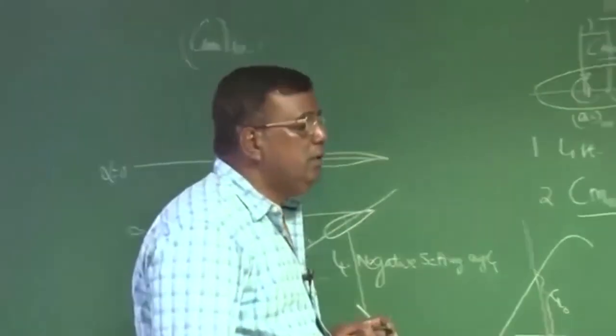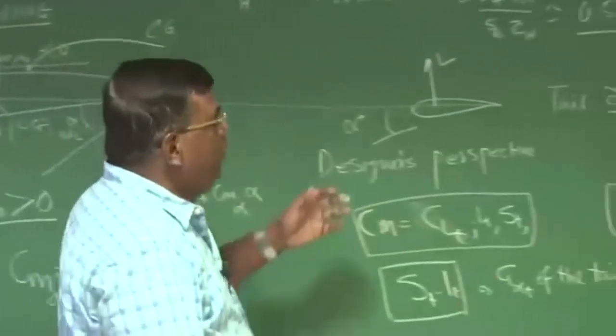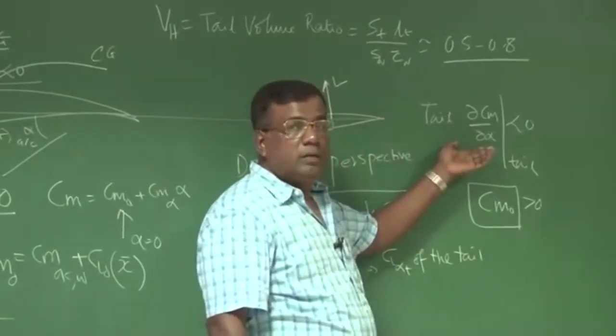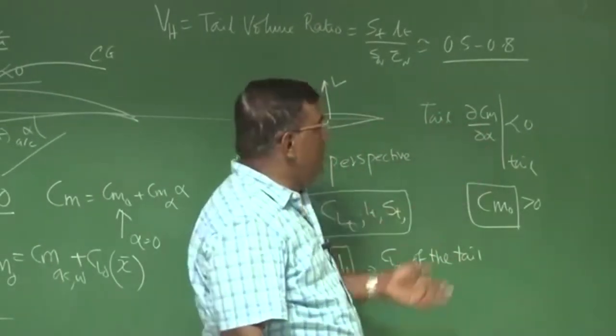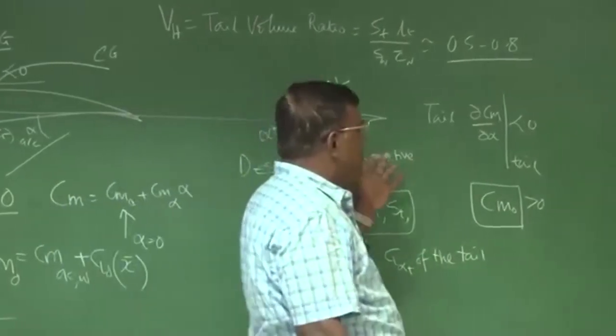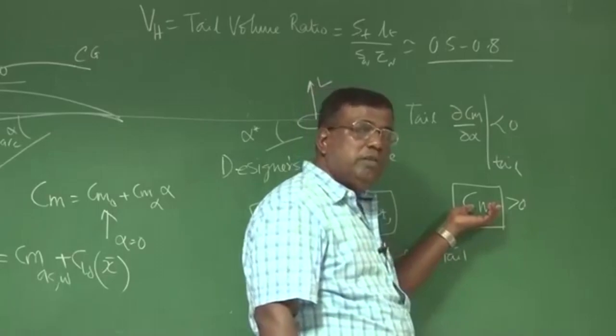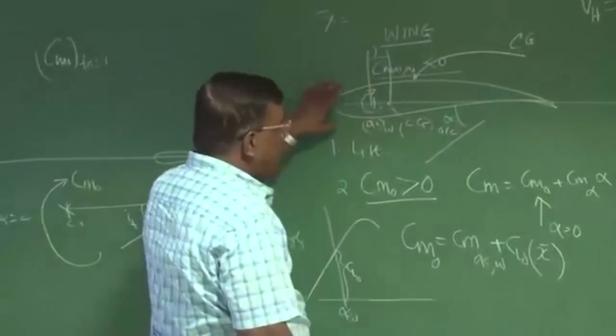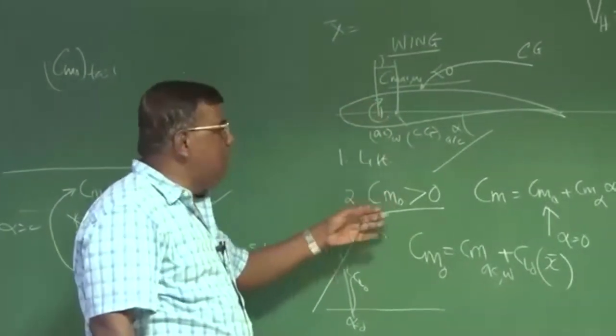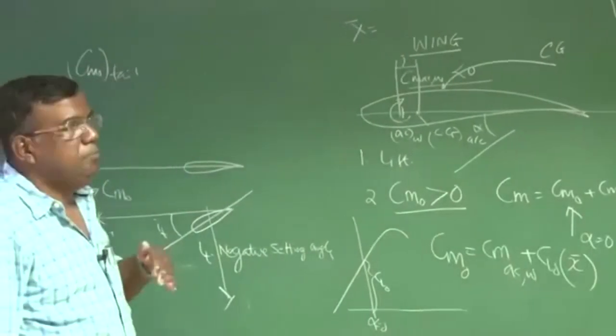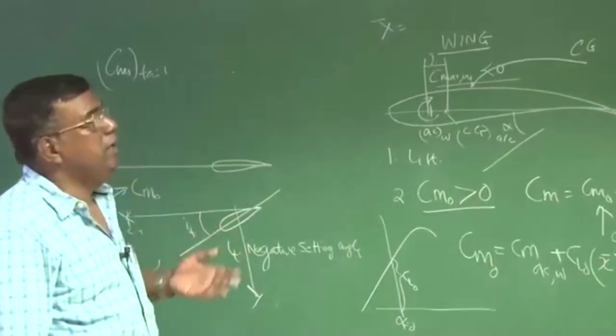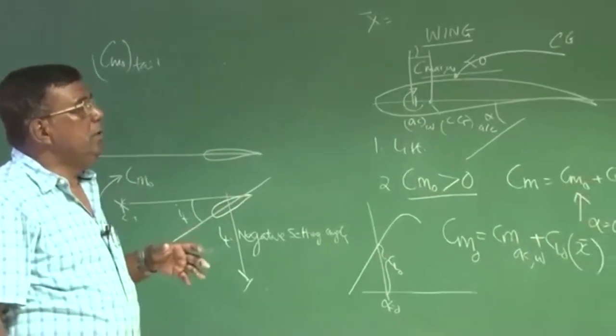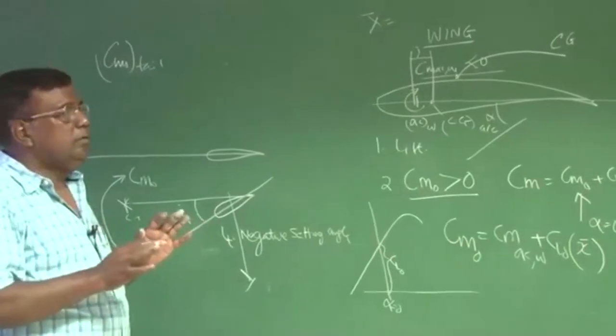So then what is the role of this? This is horizontal tail to provide major contribution towards dCm/dα less than 0, making the aircraft statically stable and also to contribute towards Cm0, making it positive as desired. What is the role of wing? To produce lift and partially small contribution towards Cm0 of the whole aircraft. If you understand these things, in the next lecture we will build it up from first principle.